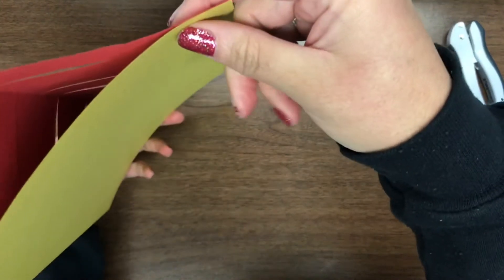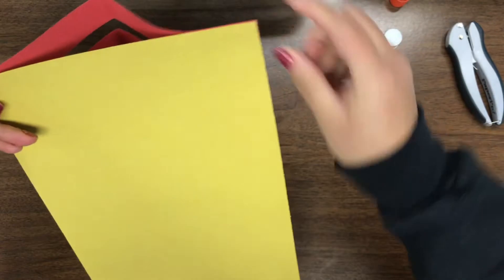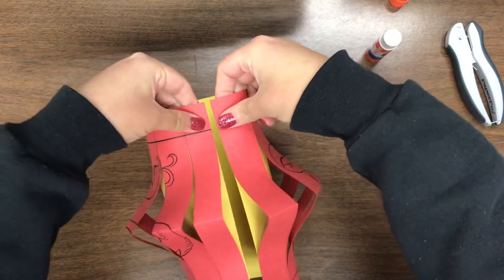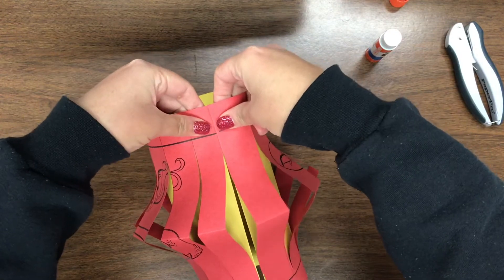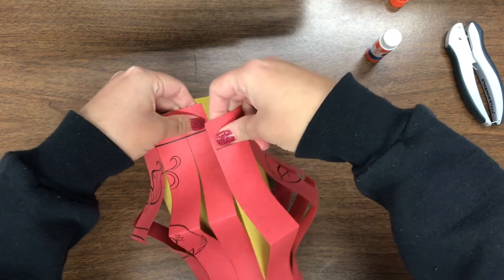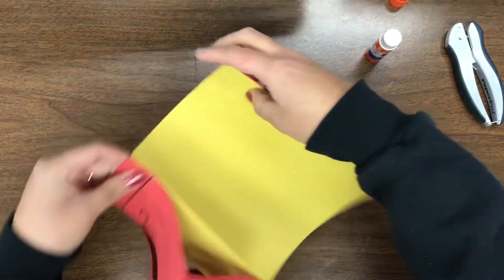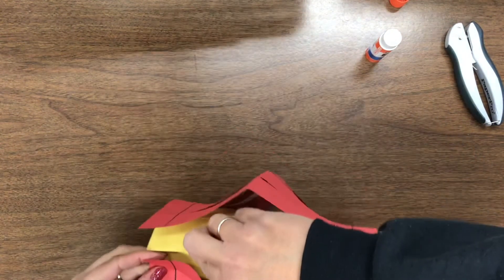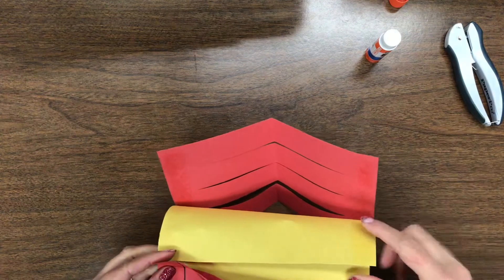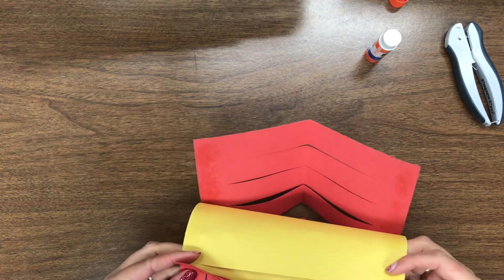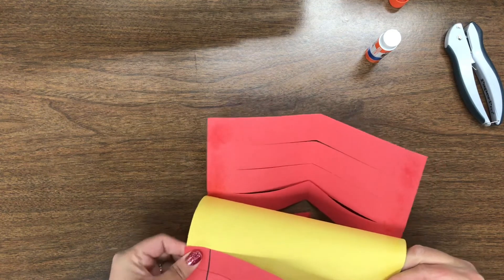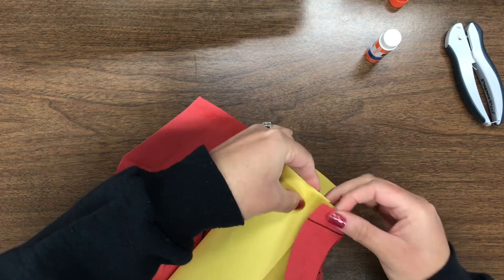So we're gonna glue it just like this. So now it looks kind of funny, right? It looks sticking up. Now we're going to roll it like this. Roll it like this. Okay? And we're gonna glue it together. So you might have to undo this very edge and glue it together like this. Get those edges together.